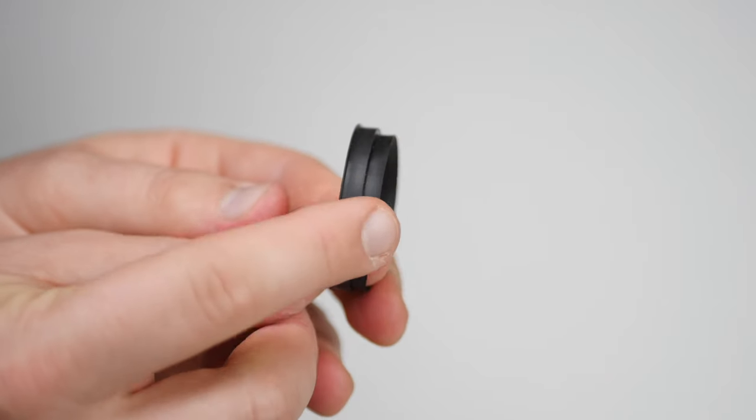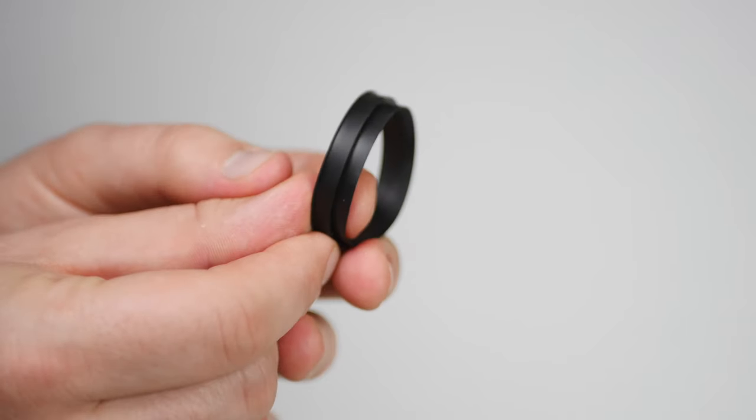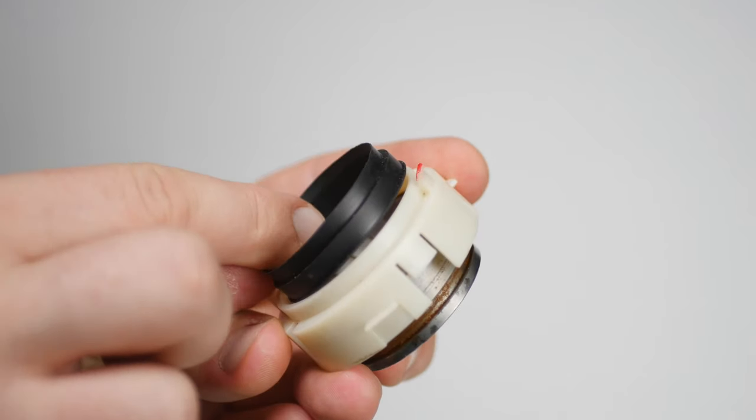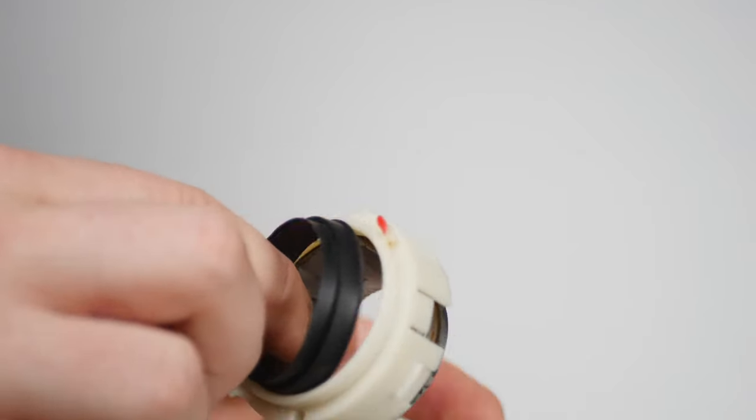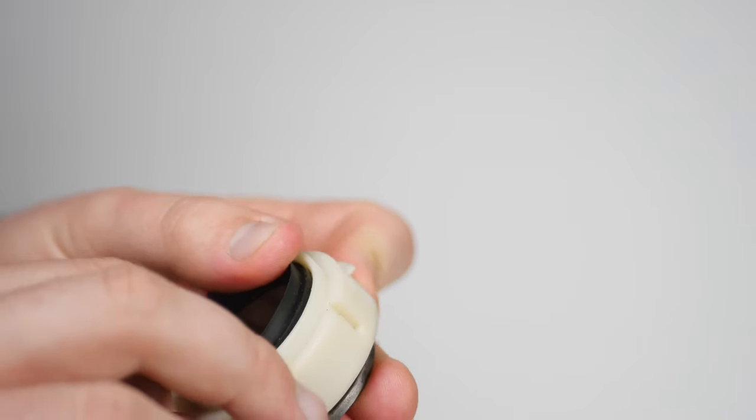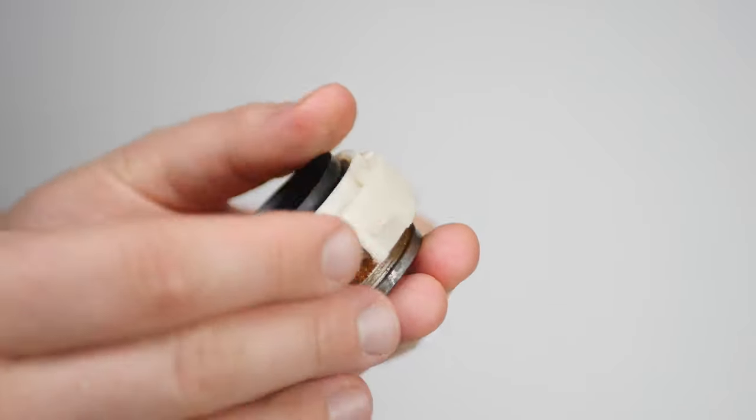The hopper gasket keeps things tidy by funneling your whole bean coffee into the grind chamber. To install, unplug your grinder, take your gasket, and place the thicker side into the top of the burr holder, pressing gently around the edges until secure.